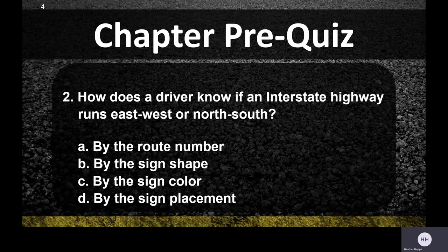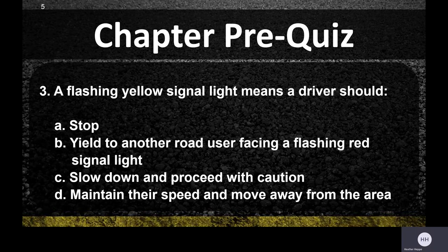The next question is: a flashing yellow light means a driver should — A, stop; B, yield to another roadway user facing a flashing red signal light; C, slow down and proceed with caution; or D, maintain their speed and move away from the area.